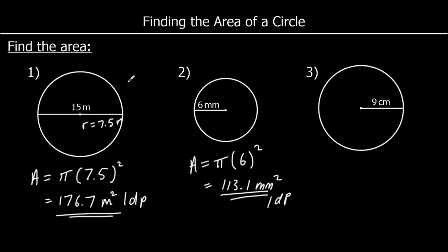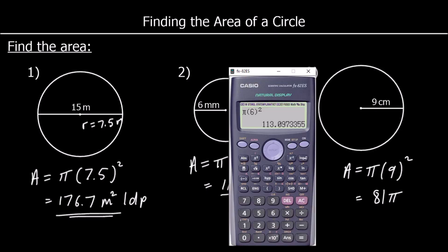And question three: we've got a radius of 9 centimetres. Pi times the radius squared is the area, so that's 81 pi. Or as a decimal, 254.5 centimetres squared.